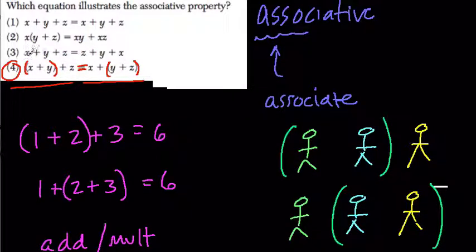The third line here, x, y, and z, or z, y, x, is commutative. The commutative property moves things around. Choice 2, x times y plus z, this is distribution over addition: x times y plus x times z.